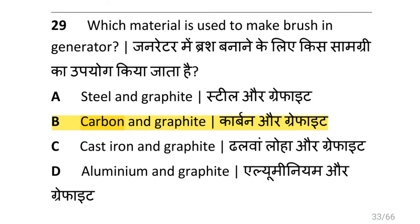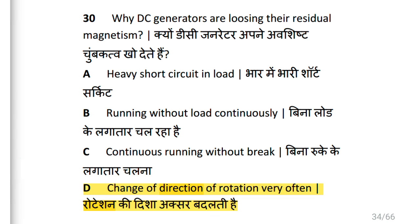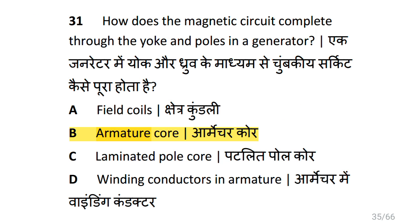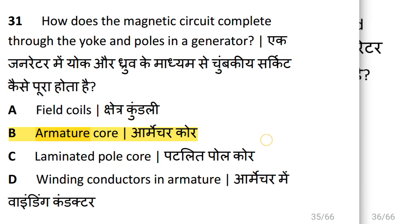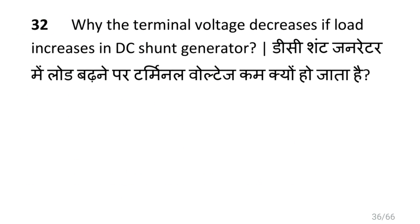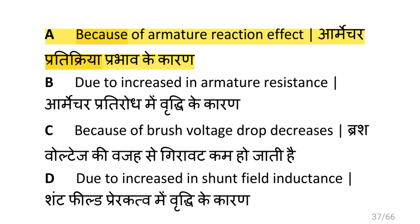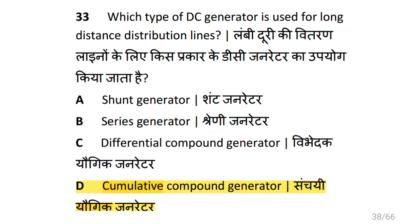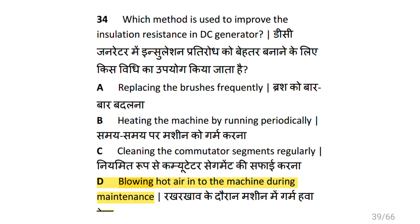Which material is used to make brushes in a generator? That is carbon and graphite. Why do DC generators lose their residual magnetism? Because of changing the direction of rotation very often. How does the magnetic circuit complete through the yoke and poles in a generator? That is by armature core. Why does terminal voltage decrease when load increases in a DC shunt generator? That is because of armature reaction effect. Which type of DC generator is used for long distance distribution lines? That is cumulative compound generator. Which method is used to improve insulation resistance in DC generator? That is blowing hot air into the machine during maintenance.